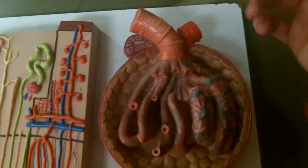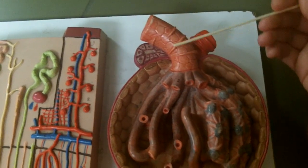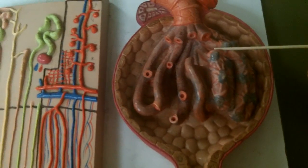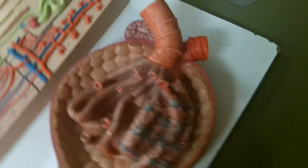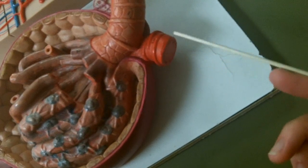So here is a larger magnification of those structures. Here we see the afferent arteriole and here we see the glomerulus, and on this outward part here this is the efferent arteriole, and it has a smaller radius than the afferent arteriole.